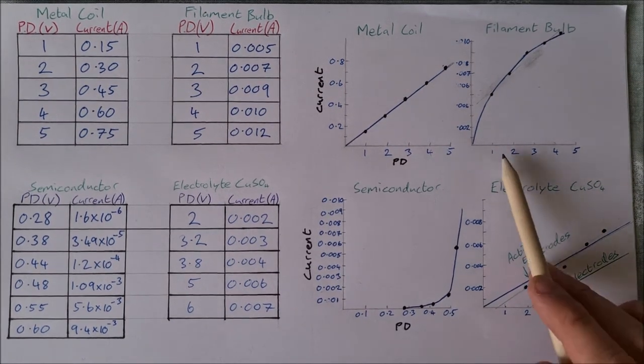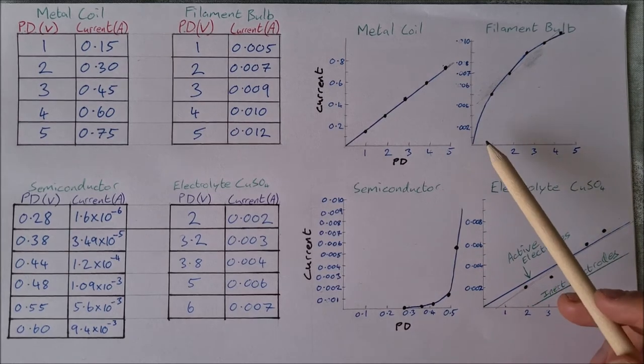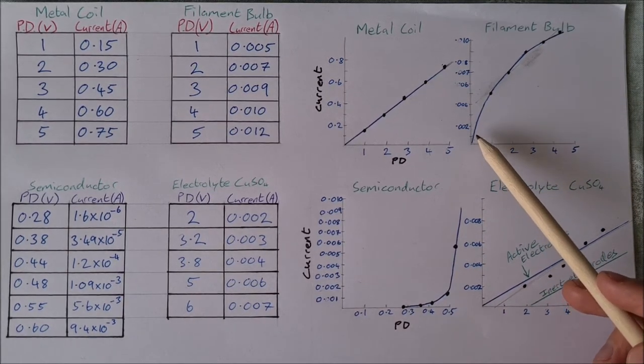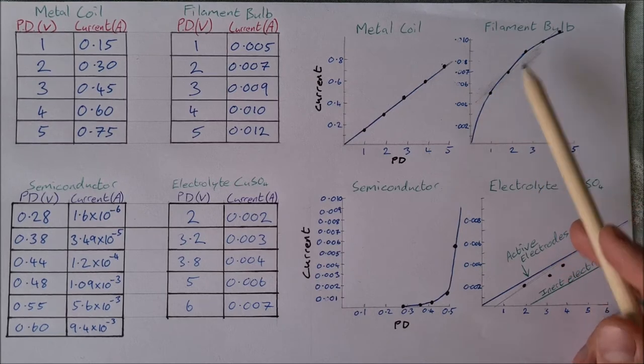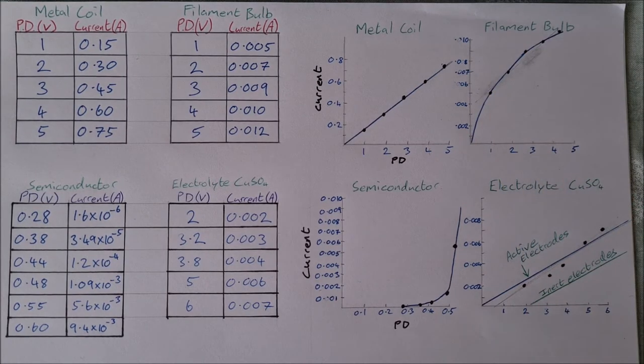For the filament bulb, as you increase potential difference, the current increases quickly initially, but then slows down as the temperature of the bulb increases.